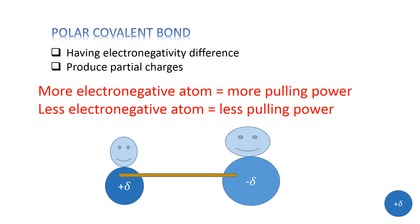What is a polar covalent bond? Atoms having an electronegativity difference produce partial charges — partial positive and partial negative — and as a result, a polar covalent bond is formed. The more electronegative atom has greater pulling power and carries a partial negative charge, whereas the less electronegative atom has less pulling power and carries a partial positive charge.